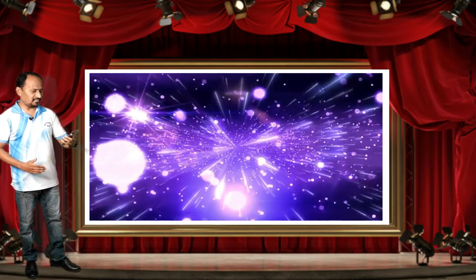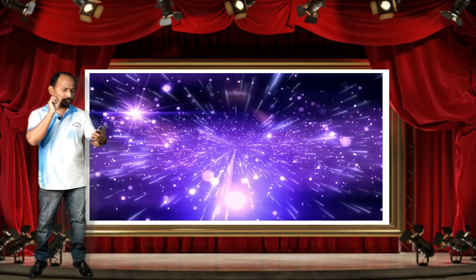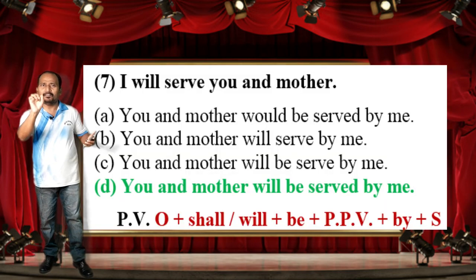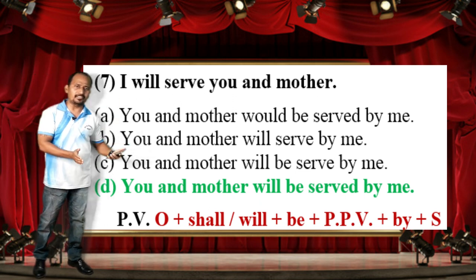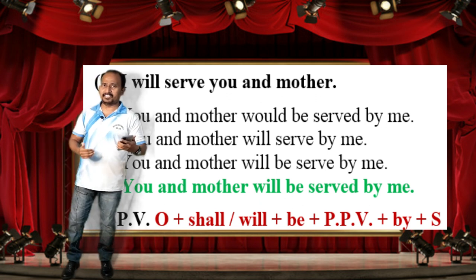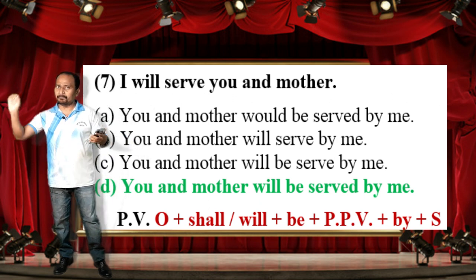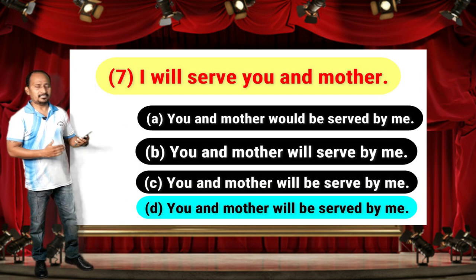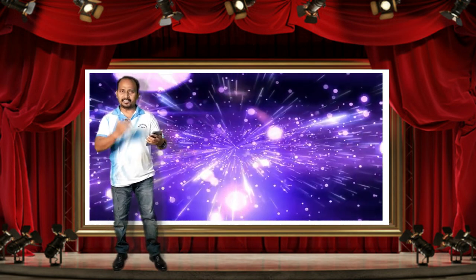The correct answer is option D: 'You and mother will be served by me.' The given sentence is in simple future tense. The passive voice formula for simple future tense is: Object + shall/will + be + PPB + by + Subject. That is why option D is the correct answer.